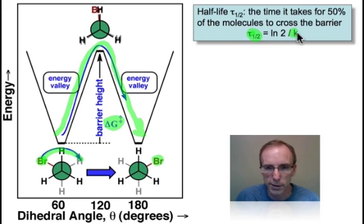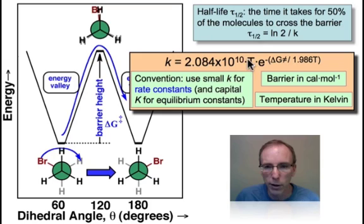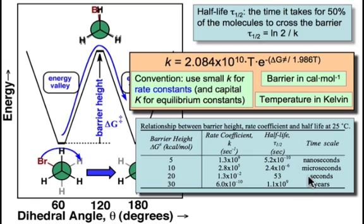Don't worry about the math here, but that rate constant is related to things we care about, like temperature and barrier height. If we plug in some numbers, we can see how long the process takes depending on the barrier height. The values in this table were calculated with the equation. You don't need to memorize these values, but they give you a feeling for what different barrier heights mean for a process at room temperature. Room temperature means that's the amount of thermal energy we've imparted into the molecule to overcome that barrier.